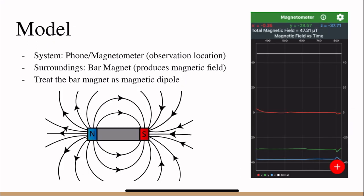For the model, the system of this experiment is the phone/magnetometer, which is also the observation location. The surroundings is the bar magnet because it produces the magnetic field. We can also treat the bar magnet as a magnetic dipole.